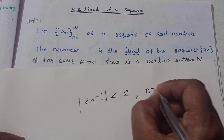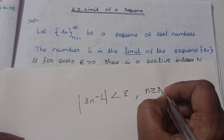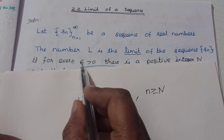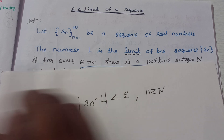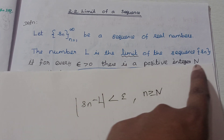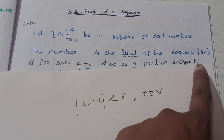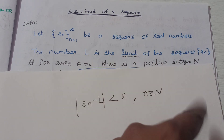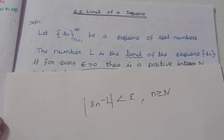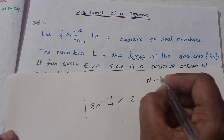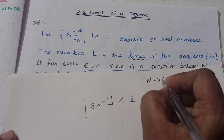For n greater than or equal to capital N, the epsilon value holds. The capital N is a positive integer, and N depends on epsilon.